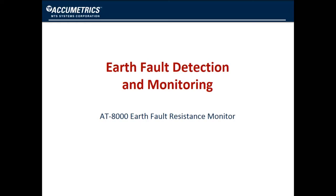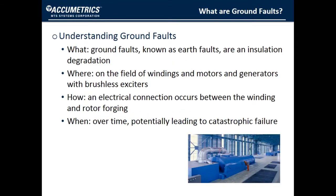Earth fault or ground fault monitors detect faults on the field windings of motors and generators with brushless exciters. On generators, a field ground fault, also known as an earth fault, is defined as an insulation degradation or breakdown that can lead to an electrical connection between the field winding on the rotor and the rotor forging. This electrical connection can potentially lead to catastrophic failure over time.